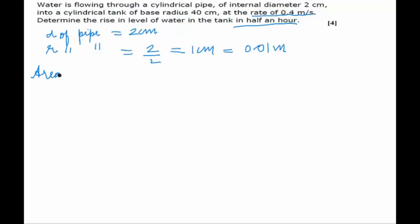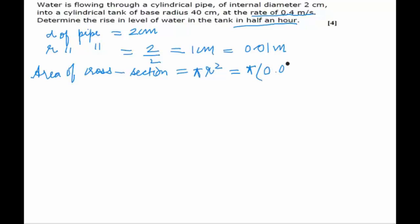The area of cross section of the cylindrical pipe would be equal to π r squared, and hence it would be equal to π into (0.01) squared square meters, which comes out to be equal to 0.0001π square meters.